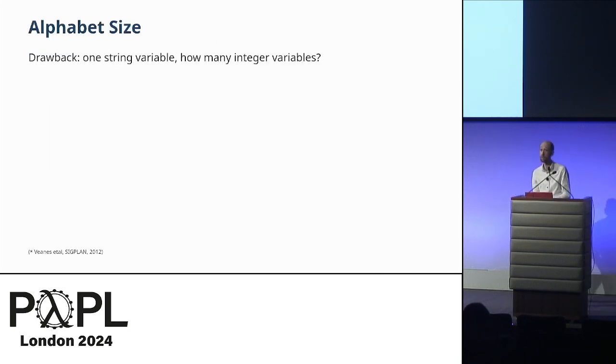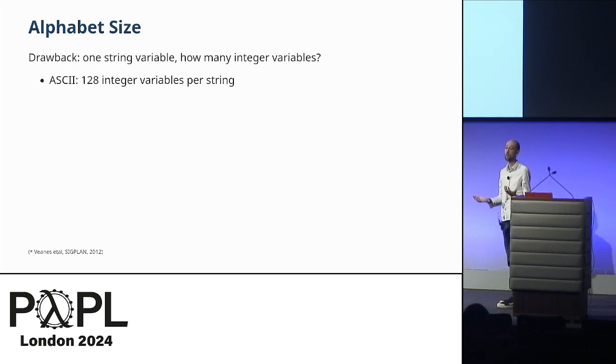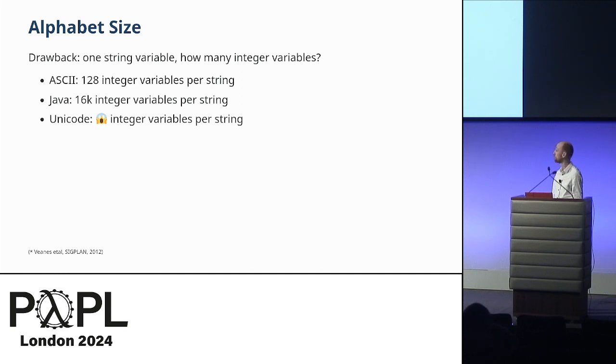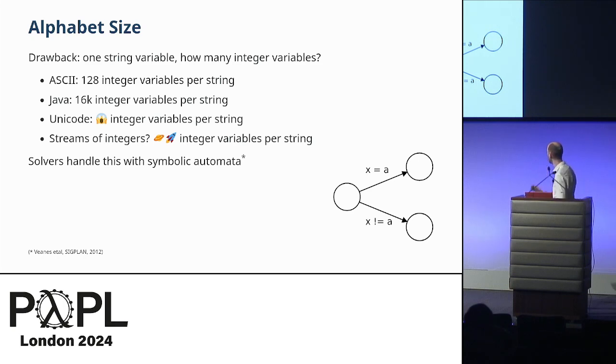What is the drawback of this? One of the main drawbacks is alphabet size. If we just have A, B, and C, it's not too bad. But if we have the full ASCII character set, that's 128 variables for every string we have. That's already feeling a bit funky. In Java, we'll need 16,000 variables. In Unicode, it would just go crazy. And then if we want to do something fancier, like have streams of integers, then we need an infinite number of variables. So that means that we're not going to do very well if we just go naively for this.